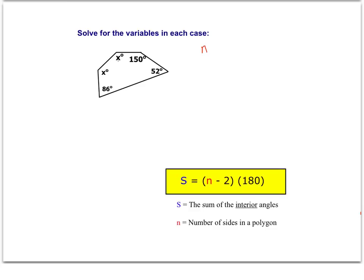First we need to find what n equals. Counting the sides, n equals 1, 2, 3, 4, 5 — this is a five-sided figure. So if n equals 5, I plug that in to find the sum of the interior angles of this pentagon. 3 times 180 is 540 degrees. We know a pentagon's sum of interior angles is 540 degrees.